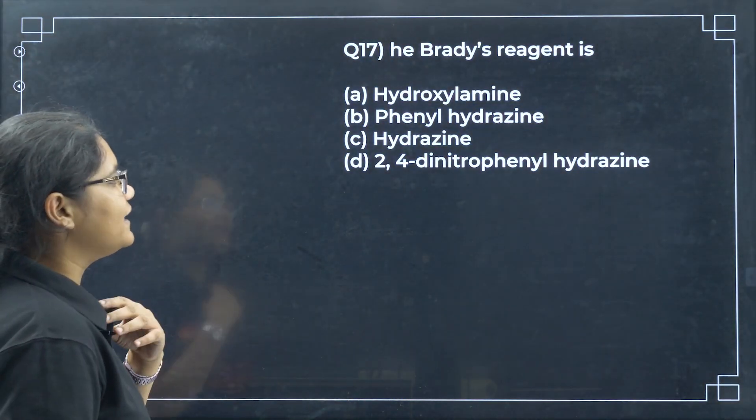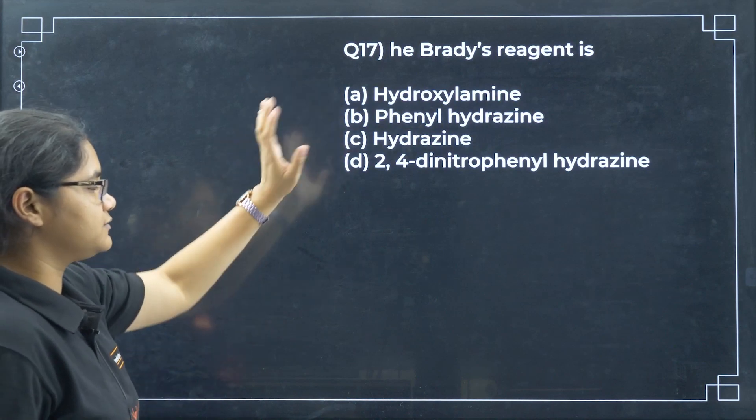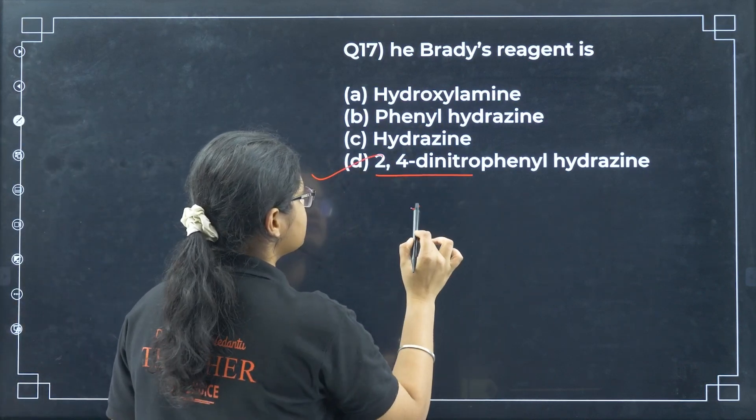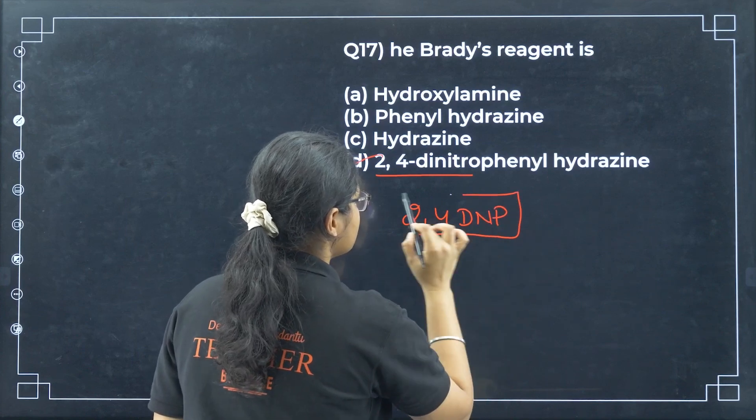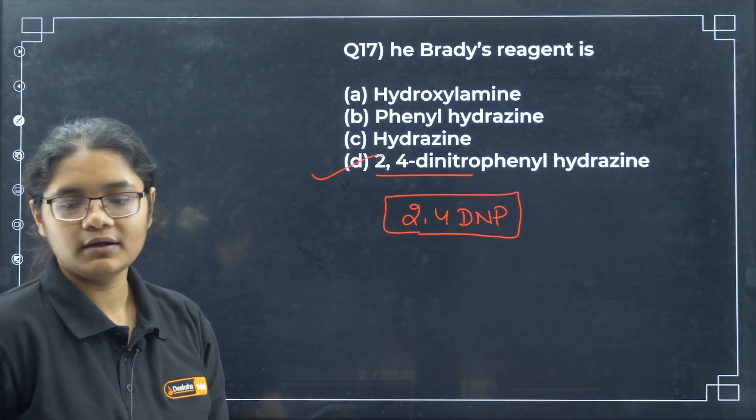Next, Brady's reagent. This is very important: 2,4-dinitrophenylhydrazine which we commonly see as 2,4-DNP. That is the answer, option D here.